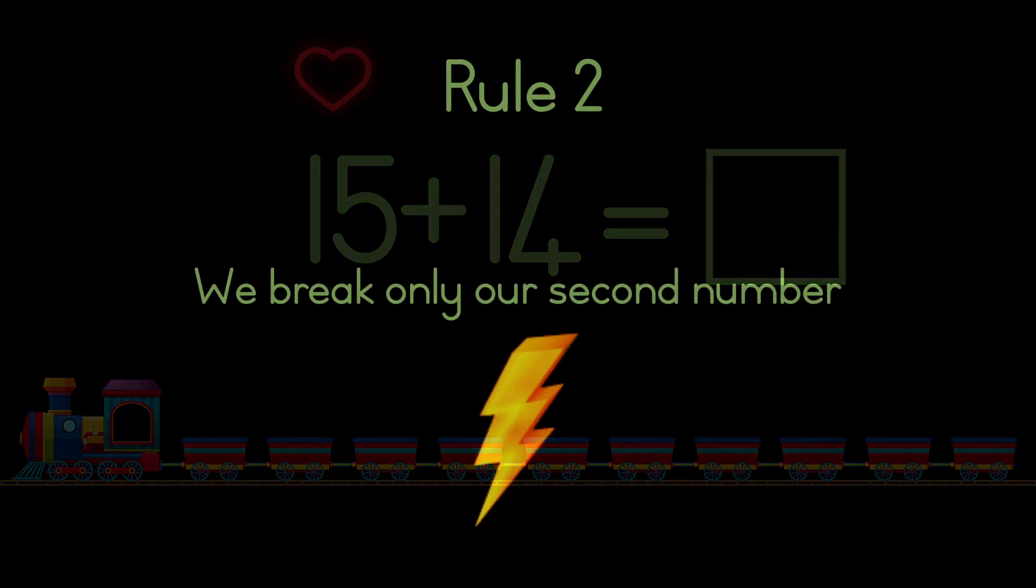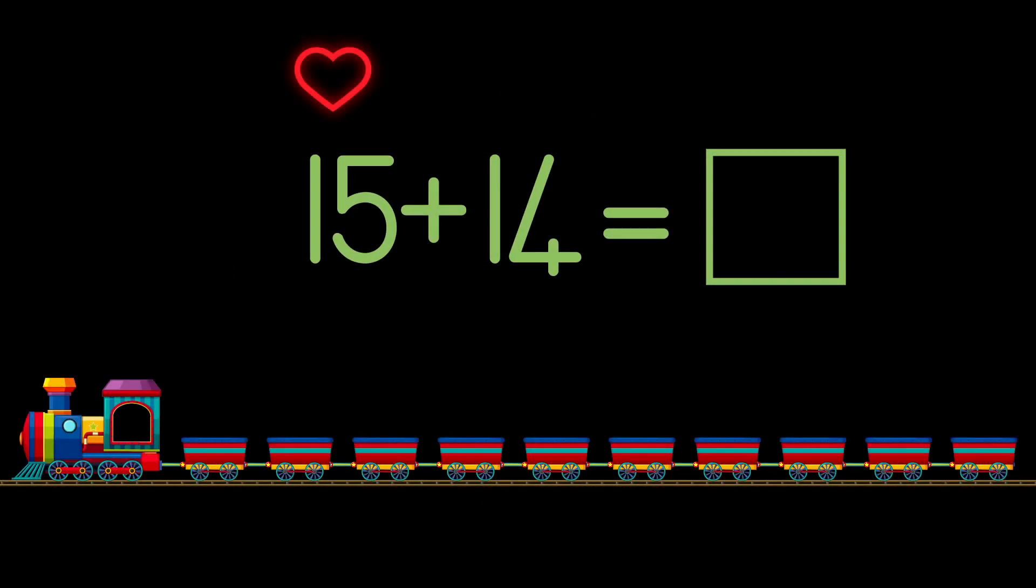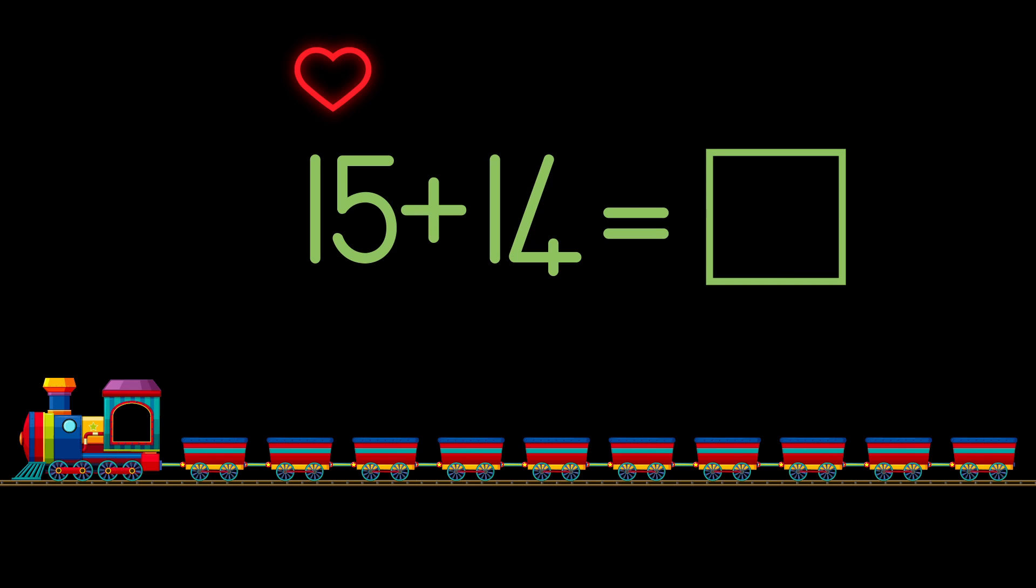Rule two: we break only our second number. Let's look at the sum again, 15 plus 14. We have a heart above the 15 which means that this is our special number we should not break. And we're going to use another picture for the second number.